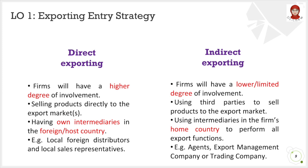On the other hand, indirect exporting is usually used by companies that have few resources and is also suitable for firms that lack contacts and experience in doing international business. Firms will have a lower degree of involvement because they will use a third party to handle all the exporting process. The firms only have to get their products ready and appoint intermediaries such as agent, export management company, or trading company in their own home country to perform all export functions.